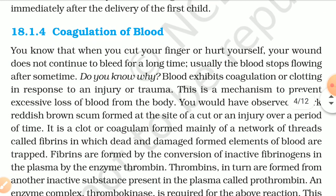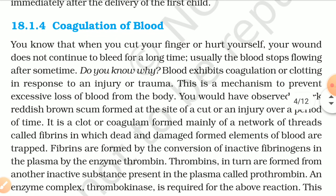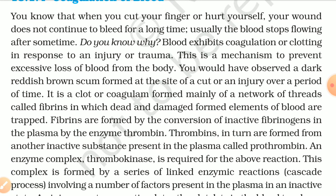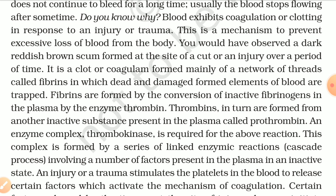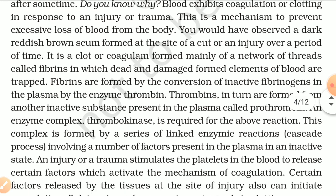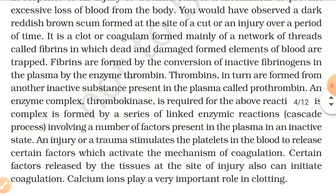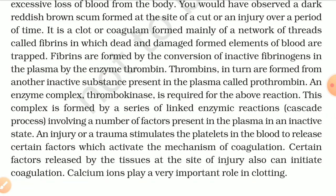18.1.4 Coagulation of Blood. When you cut your finger or hurt yourself, the blood stops flowing after some time. Blood exhibits coagulation or clotting in response to an injury or trauma — a mechanism to prevent excessive loss of blood. A clot or coagulum forms mainly as a network of threads called fibrins in which dead and damaged formed elements of blood are trapped. Fibrins are formed by the conversion of inactive fibrinogen in the plasma by the enzyme thrombin.